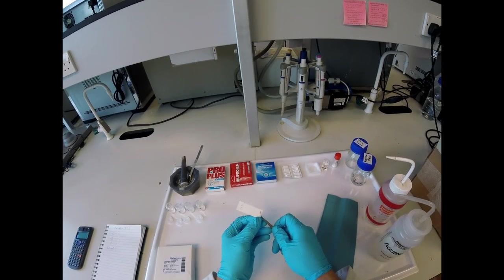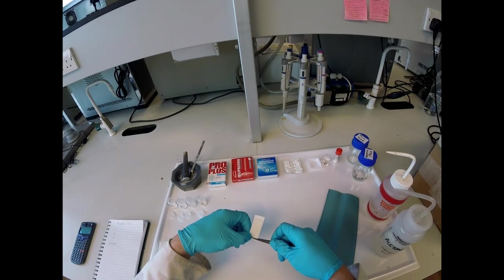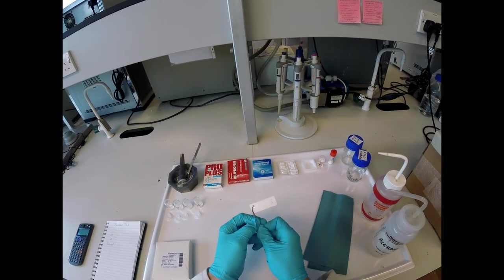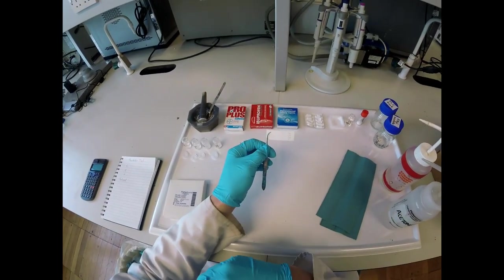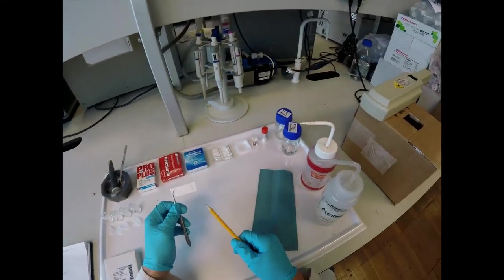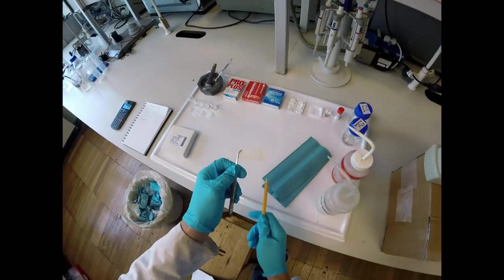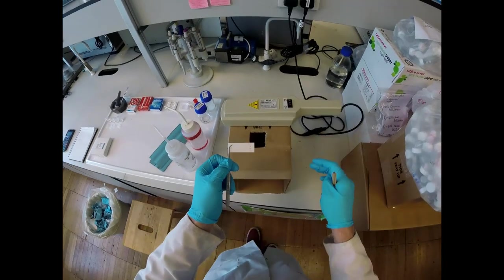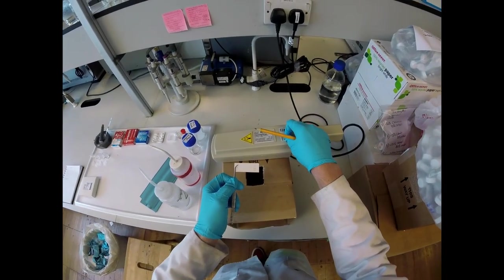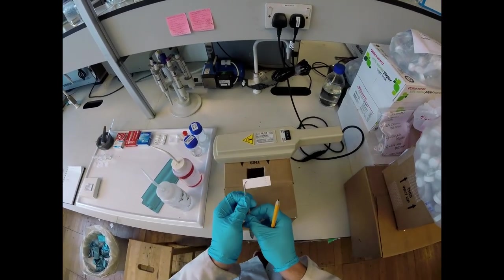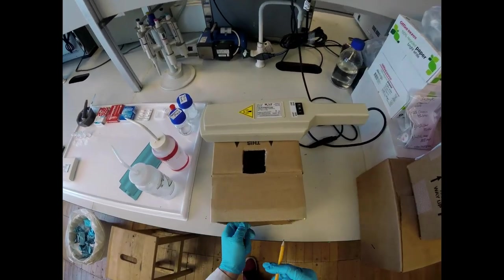Now that that's dry, we can use short wave UV to visualize the plate. What we're looking for is dark patches where the UV light is absorbed and so the plate doesn't fluoresce as it normally does under UV light.